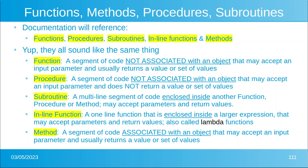You might use a subroutine because you're writing a complex method and there's a small thing you do over and over again. It may or may not accept parameters and may or may not return a value. A lambda is like a function except it's enclosed inside a larger expression and is exactly equal to one line — it cannot have two lines. It may or may not accept parameters and return values, and in many languages including Python they're called lambda functions. Finally, a method — which we have talked about — is a segment of code associated with an object. It may or may not accept input parameters and usually returns a value or a set of values.